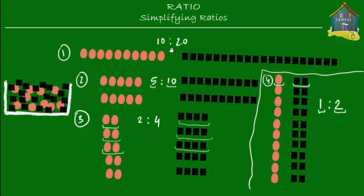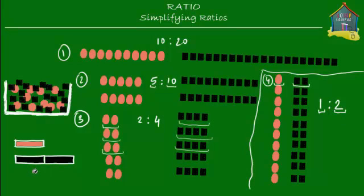She noticed that all along she had twice as many black stickers as red stickers. If you represent the stickers on a model diagram with red stickers as one unit, then the black stickers would be two units. So the true relation in the whole box was for every one red sticker, there were two black stickers — a ratio of 1 to 2.